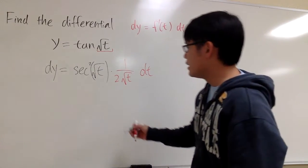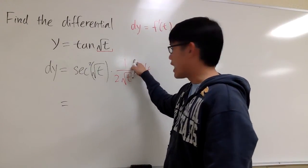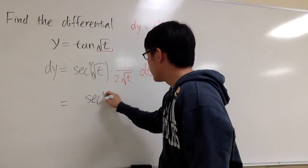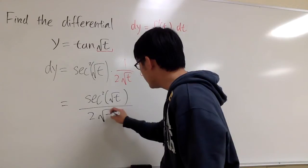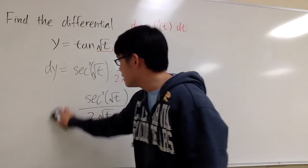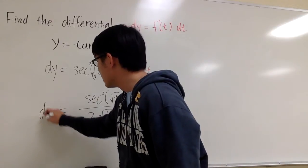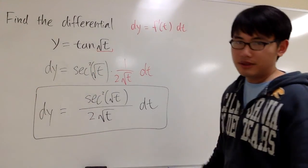And maybe if you clean up, this can be written as, this goes to the top, secant squared square root of t, on the bottom is 2 square root of t, and then on the side you put dt. And this is going to be the differential of y, so dy equals this. That's it.